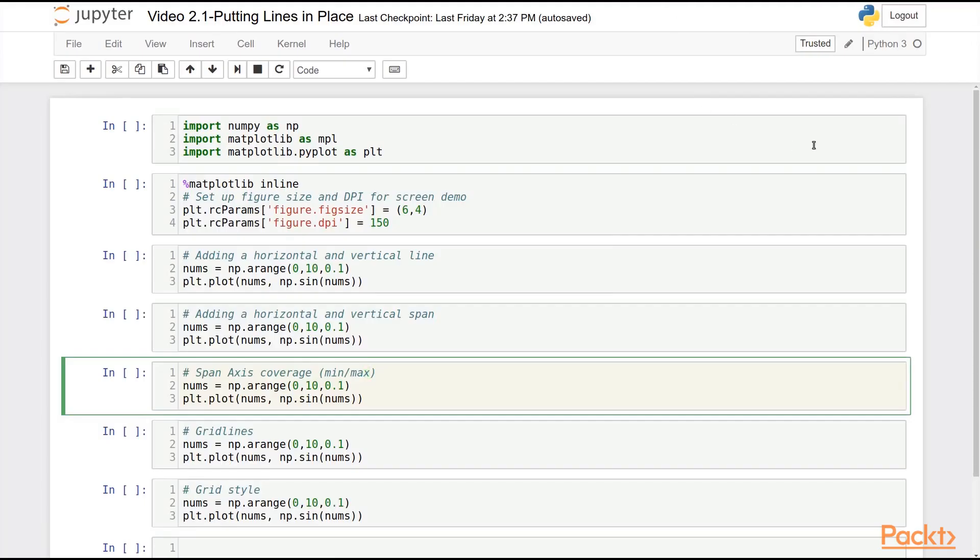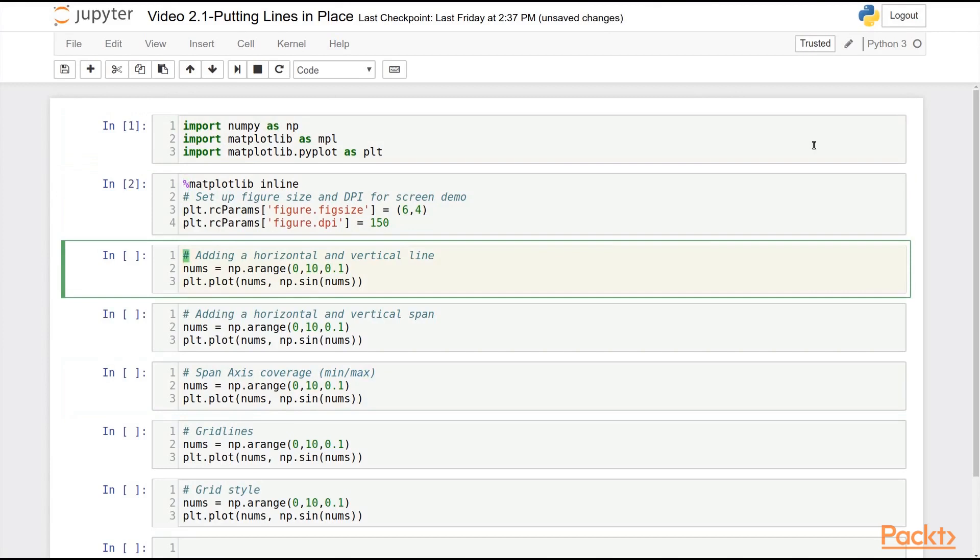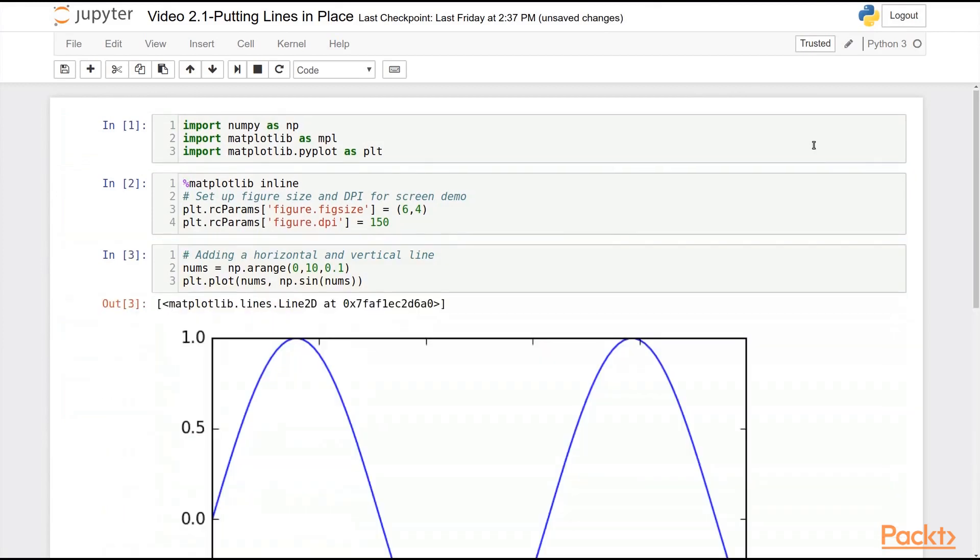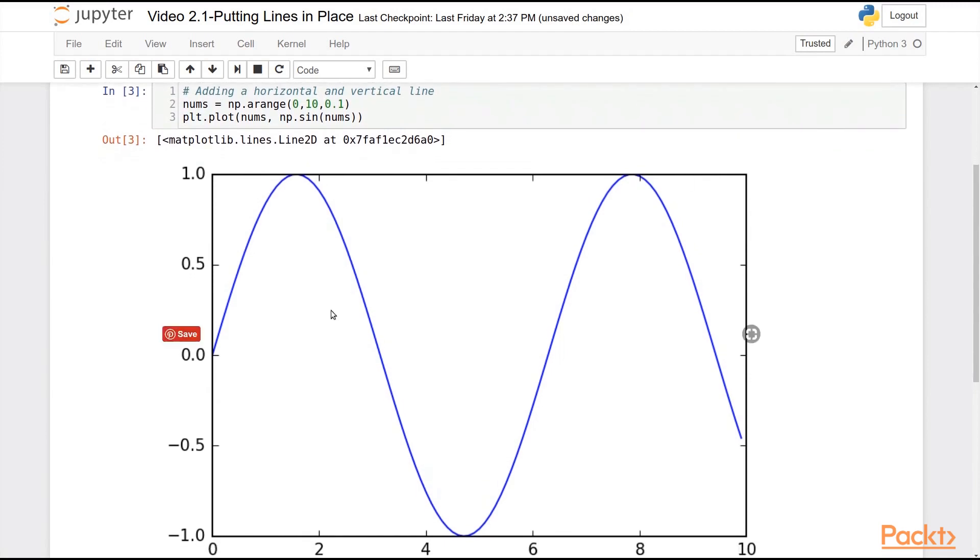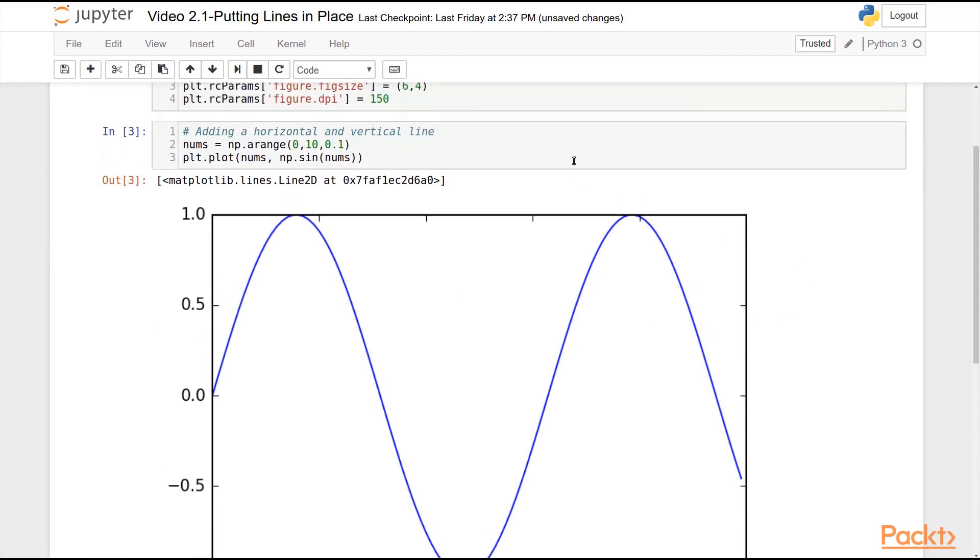As usual, we'll begin by importing our required libraries, and let's make our simple sine plot that we've seen so many times already throughout this video. Now what if I want to add an annotation here? Say a line splits the region between stuff above 0.5 and below 0.5.